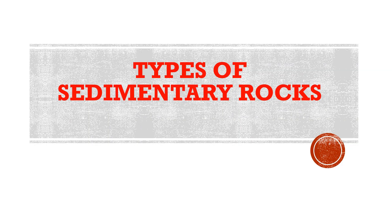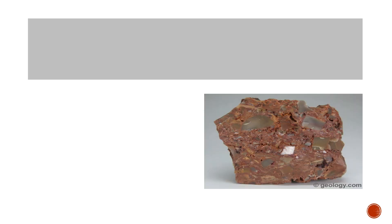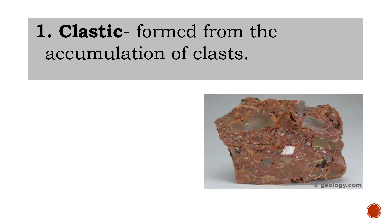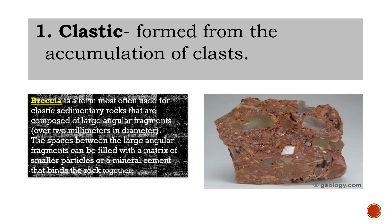There are three types of sedimentary rocks: clastic, chemical, and organic. Clastic rocks are formed from the accumulation of clasts — little pieces of broken rocks and shell. It involves the breakdown of rocks into smaller pieces at the surface, which accumulate and are lithified. Examples of clastic rocks include breccia, conglomerate, sandstone, and shale.